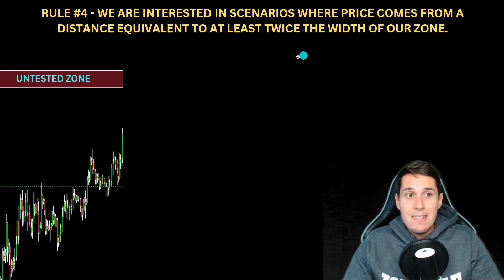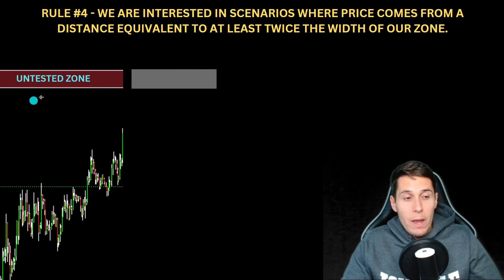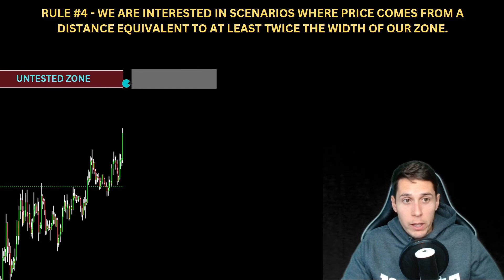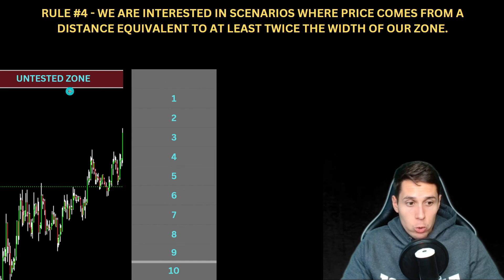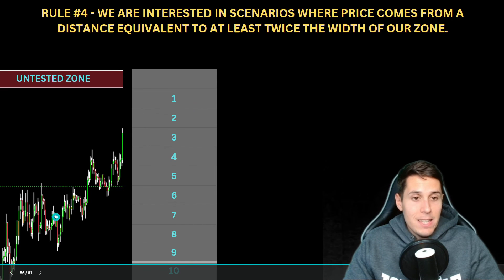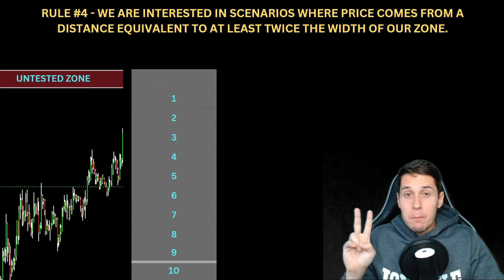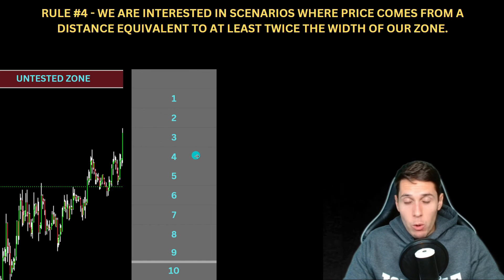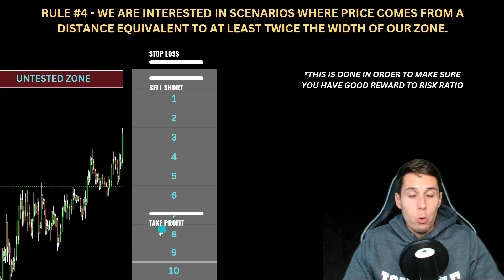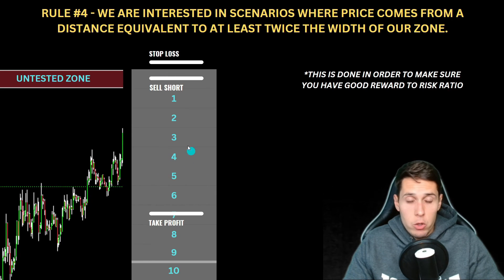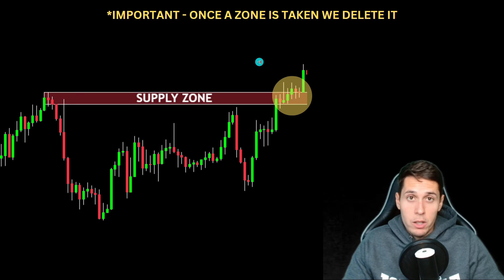Rule number four: we are interested in scenarios where price comes from a distance equivalent to at least twice the width of our zone. To measure this, draw a box with the same width as your supply zone, then measure the distance to see how far price is coming from. Two times is the bare minimum — you actually want more than that; the more the better. This ensures you have a good reward-to-risk ratio, because when you place your trade, your take profit will be much further than your stop loss. That's what reward-to-risk ratio means, and it's very important if you want to be a successful trader.